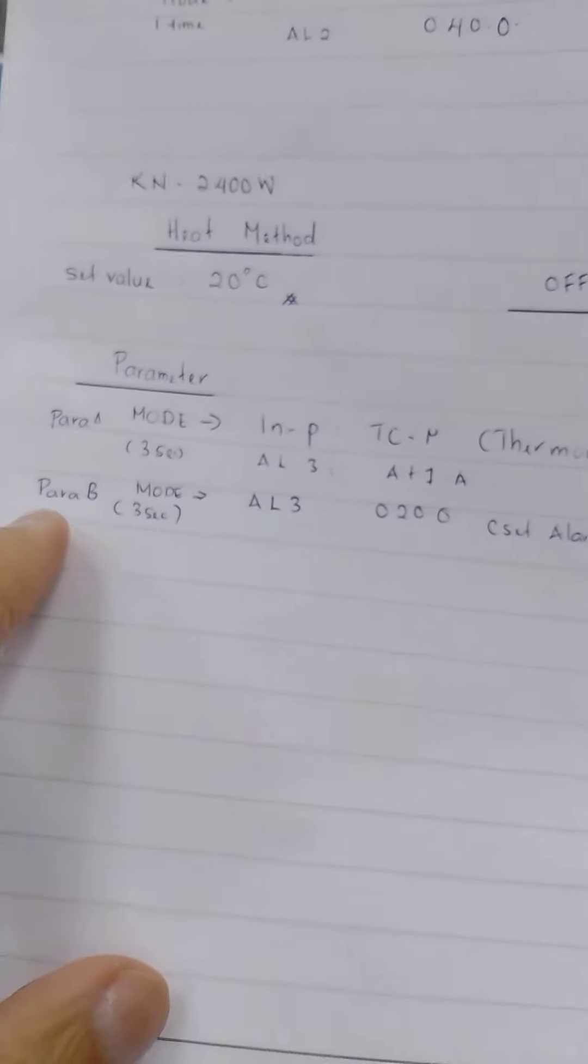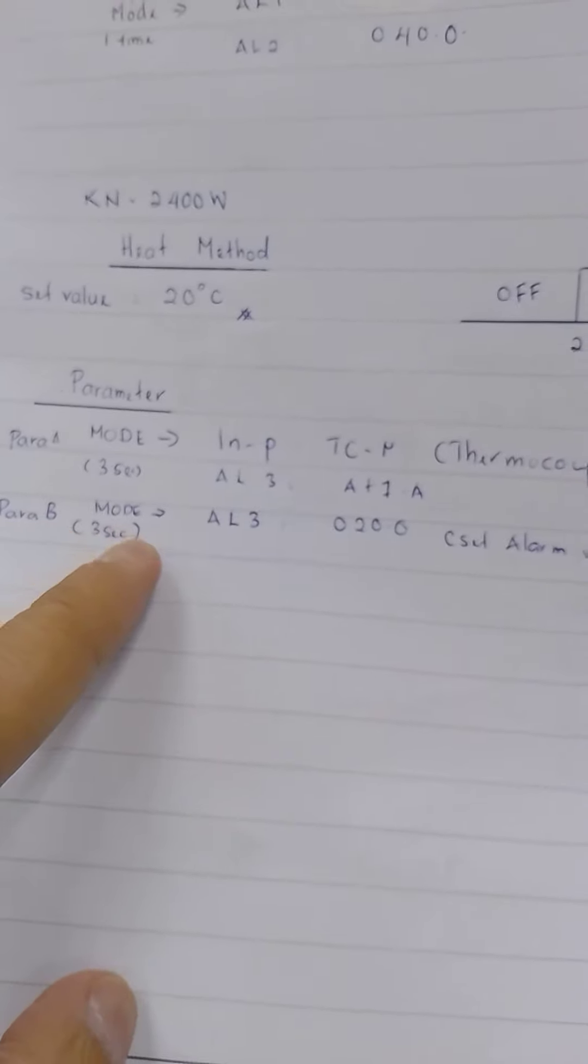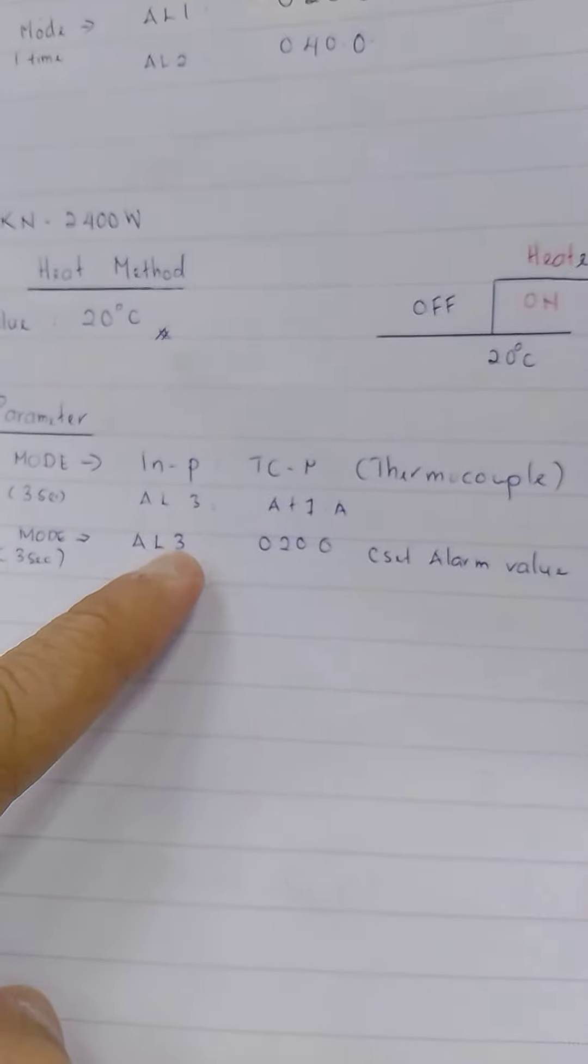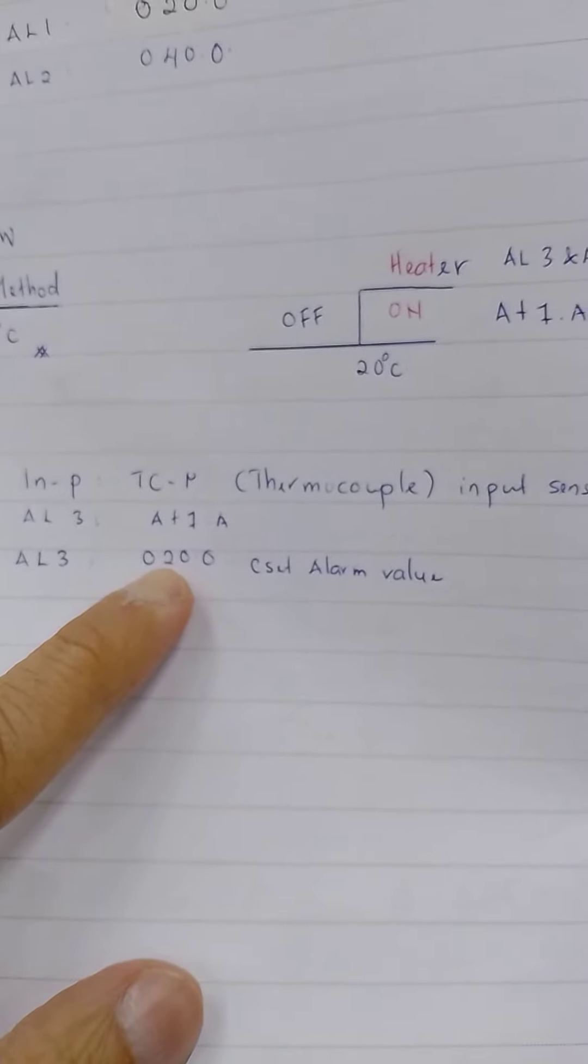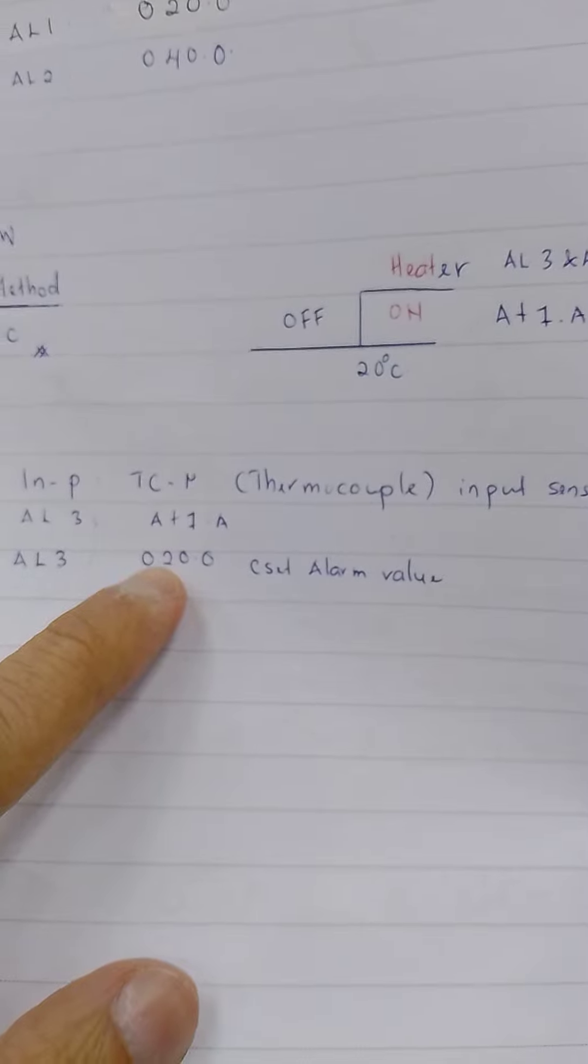So then after that, go to parameter B. Mode, press 3 seconds. I use alarm 3 for set value alarm. Set alarm value 20 celsius, alright.